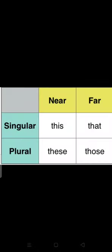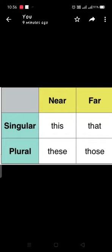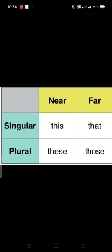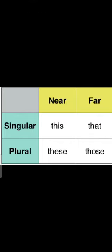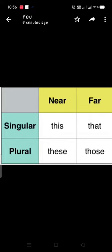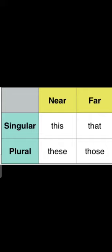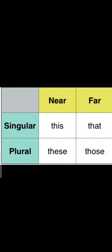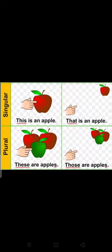Let me clarify once again. Singular means only one. One object nearby — use 'this.' One object farther away — use 'that.' More than one, that is plural. More than one nearby — use 'these.' T-H-E-S-E. More objects far away — use 'those.' T-H-O-S-E. Now, can you know the difference between this, that, these, and those? Come, let us see with examples.